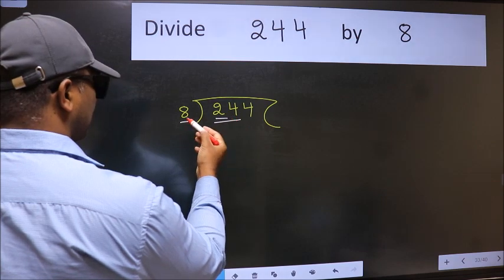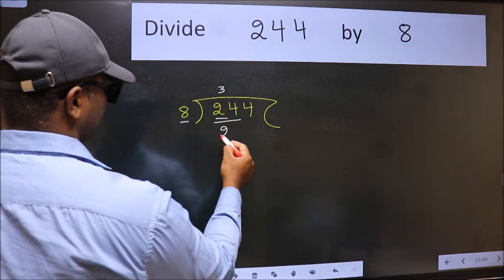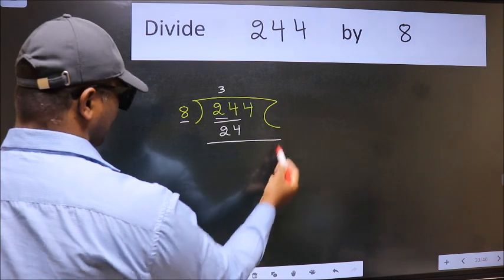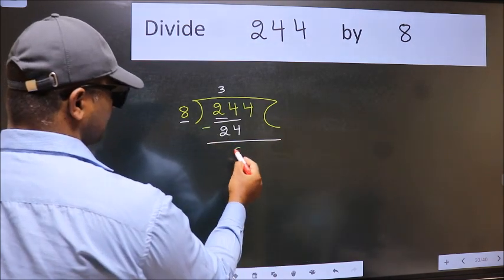When do we get 24 in 8 table? 8 threes, 24. Now we should subtract. We get 0.